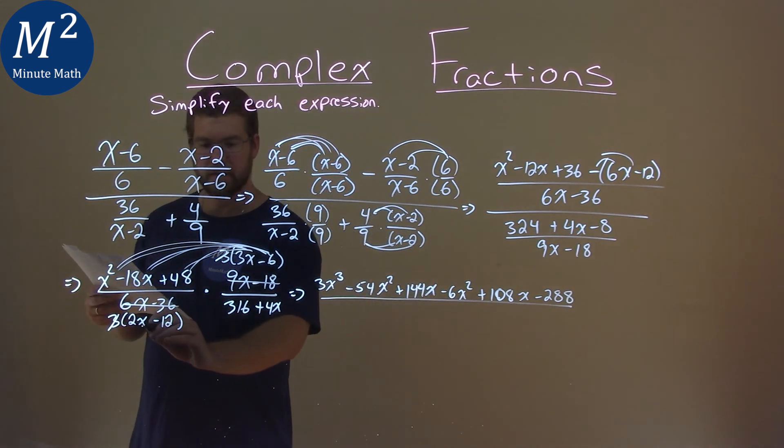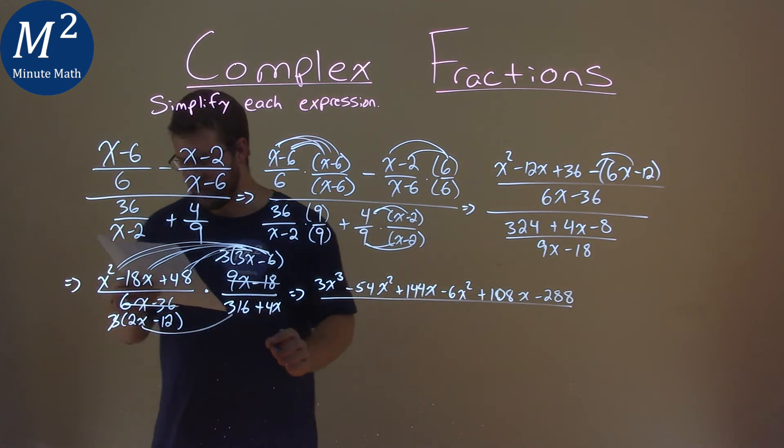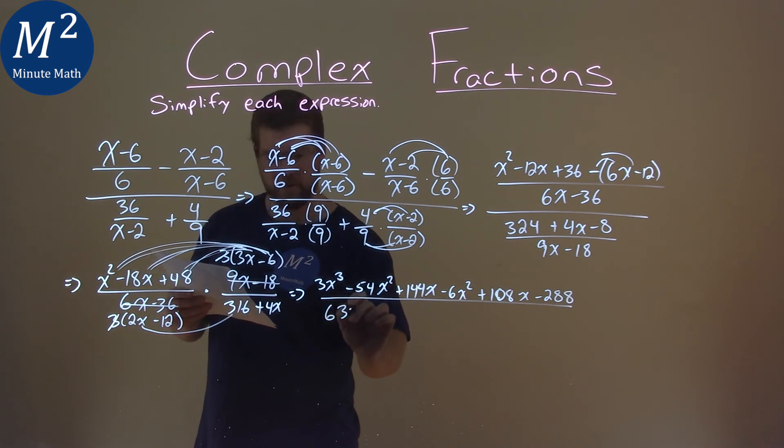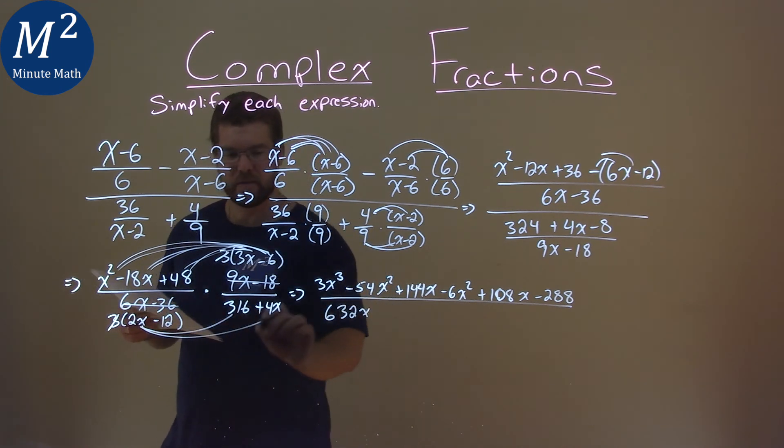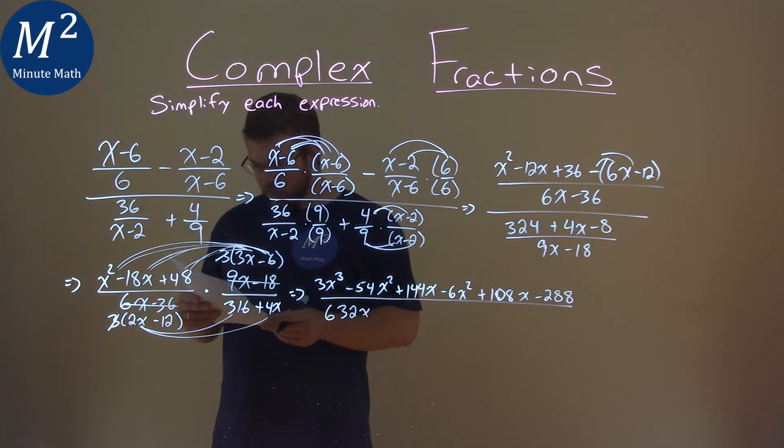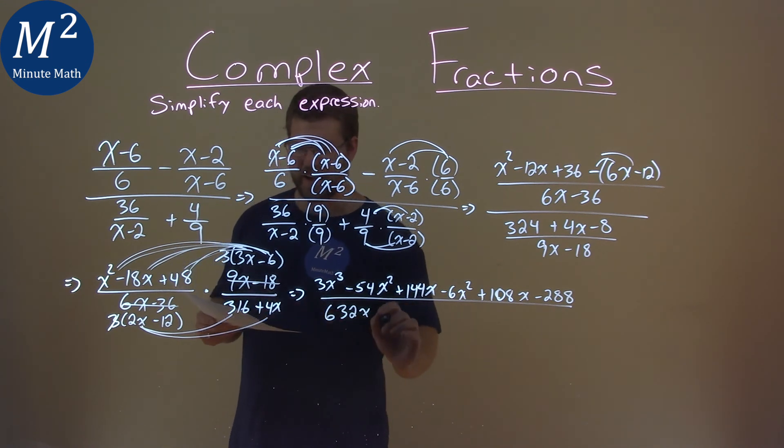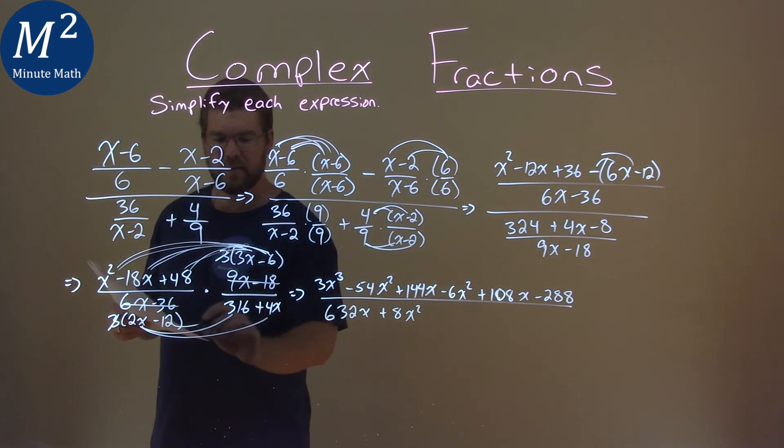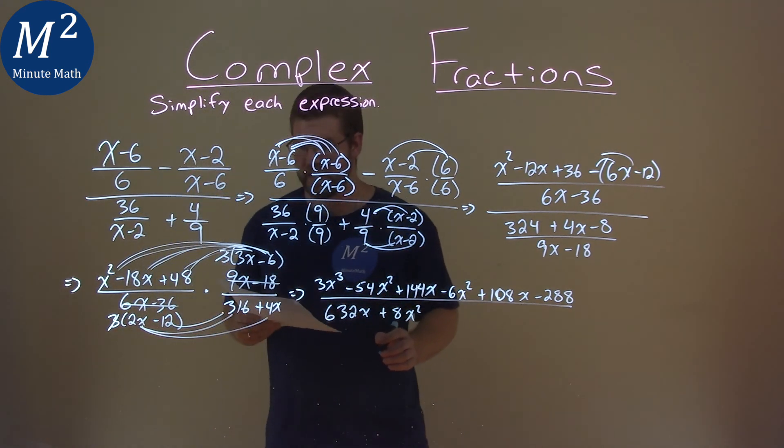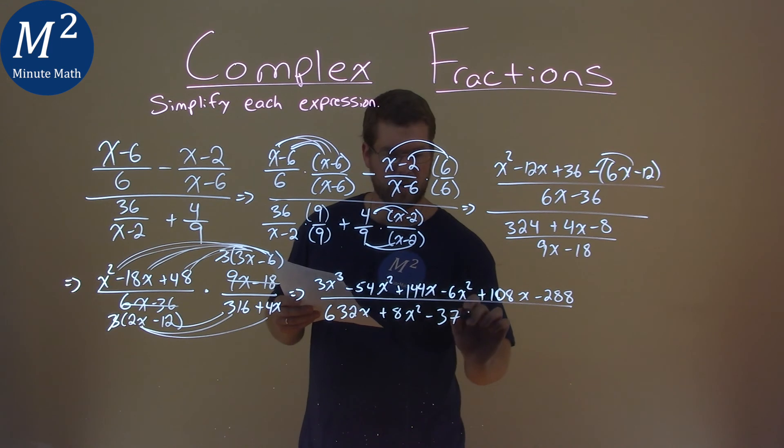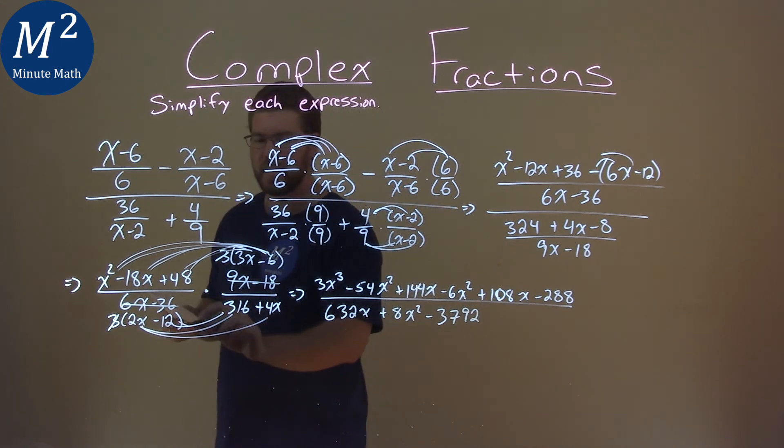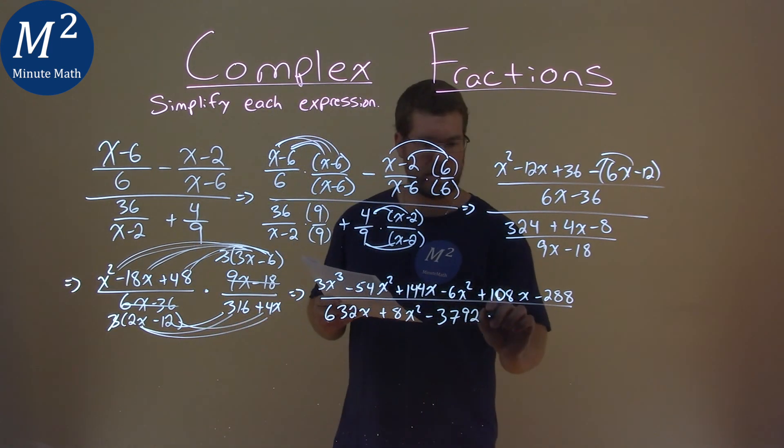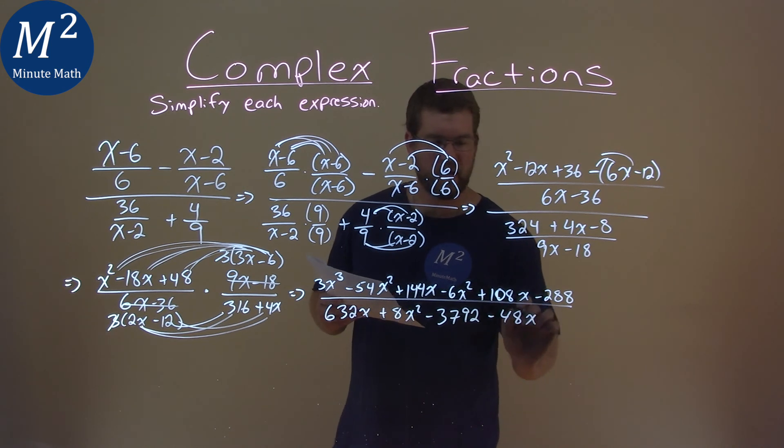We're going to do the same thing with our denominator here. 2x times 316 is 632x. 2x times a 4x is an 8x squared. This is a long problem. Negative 12 times 316. Oof, that's a negative 3,792. And negative 12 times a 4x is a negative 48x.